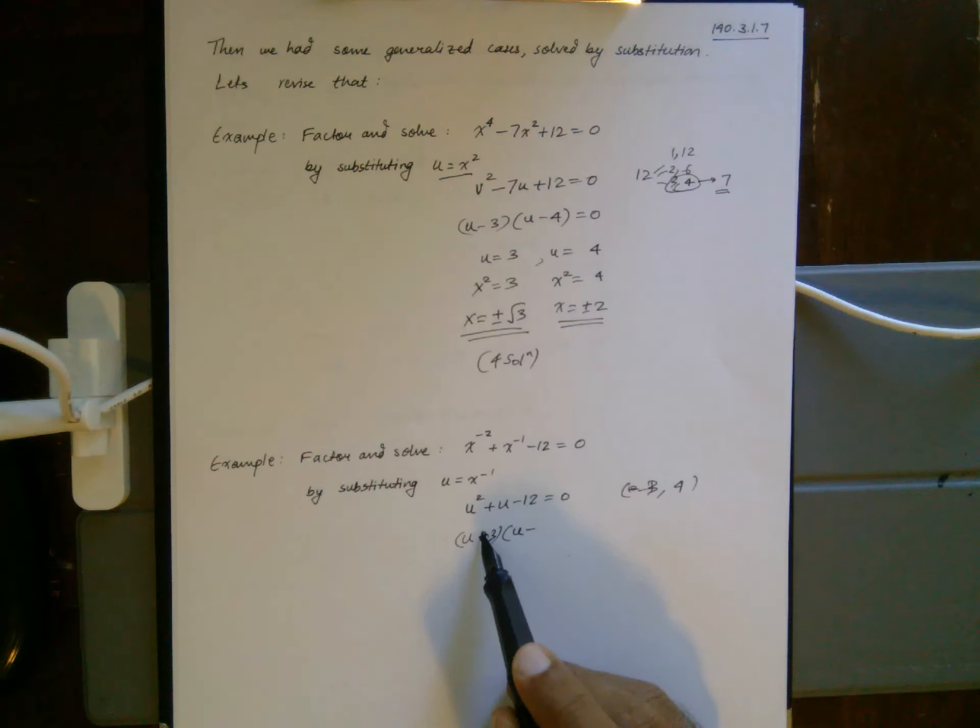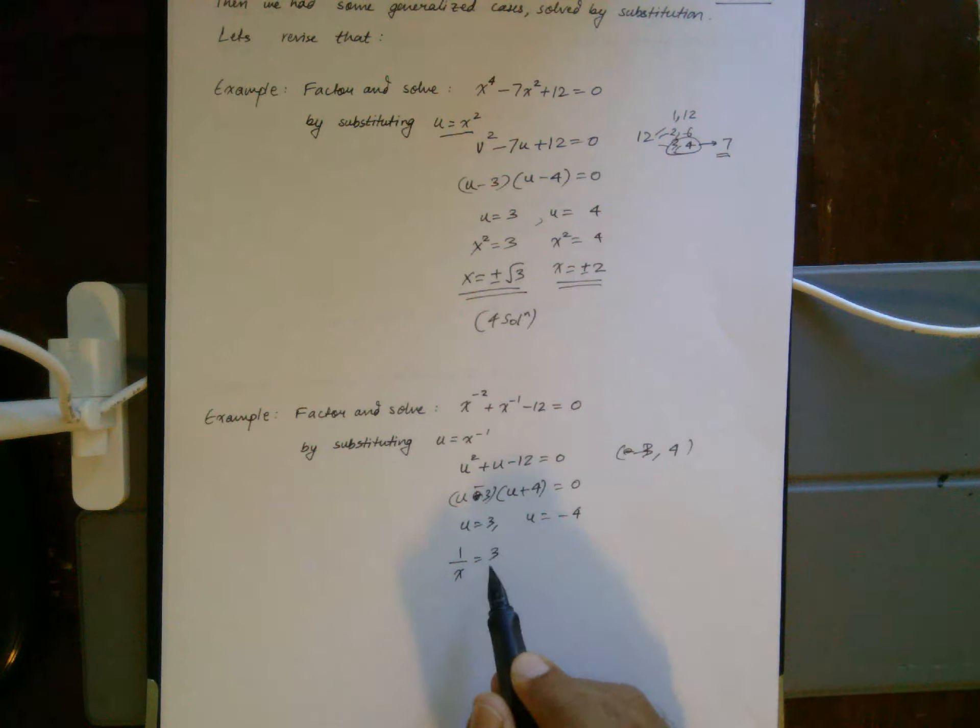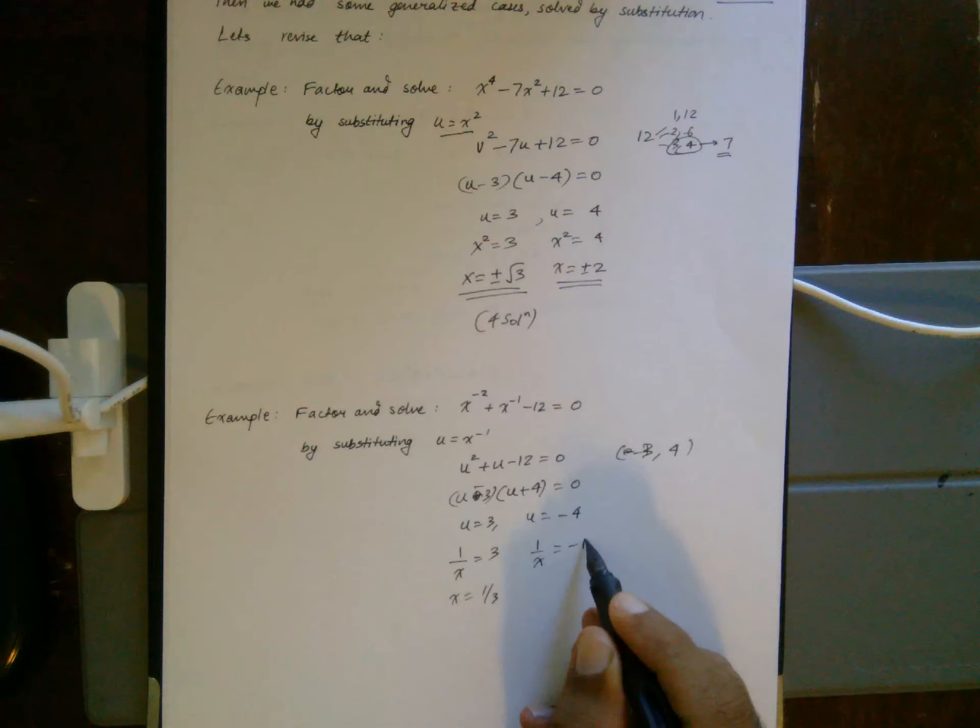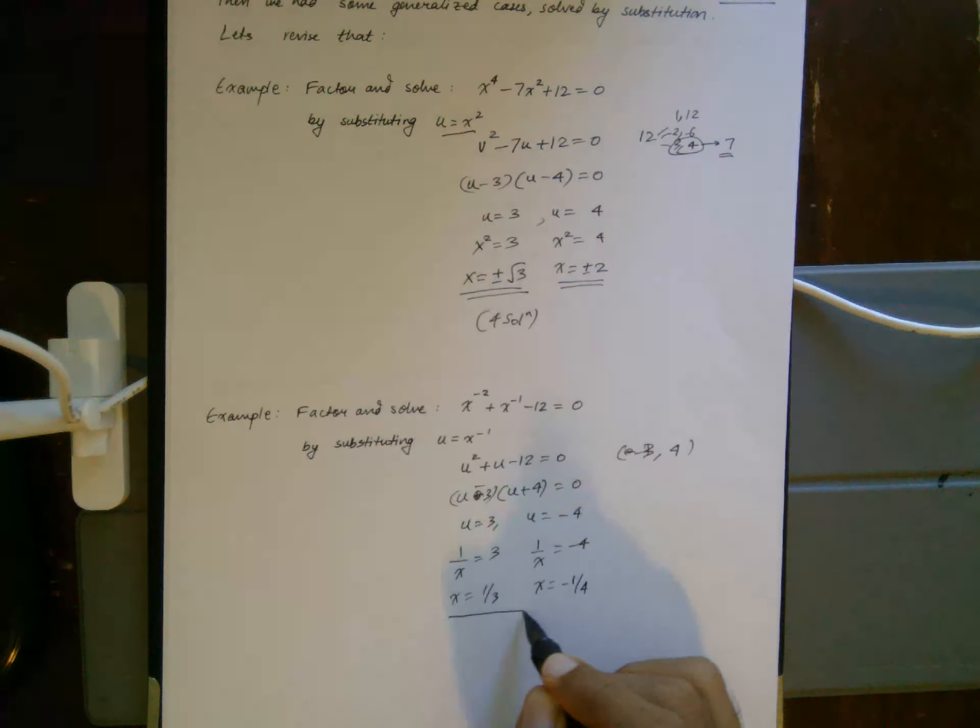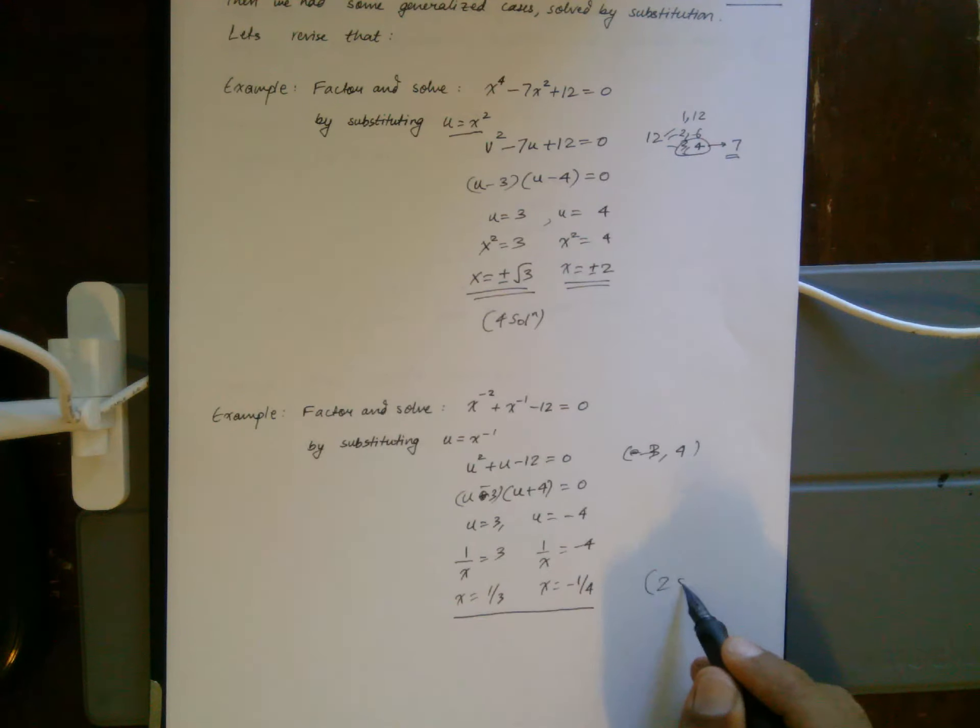That gives me u is 3 and u is negative 4. But what is u? u is 1 over x, so x is 1/3 and x is negative 1/4. So two solutions in this case.